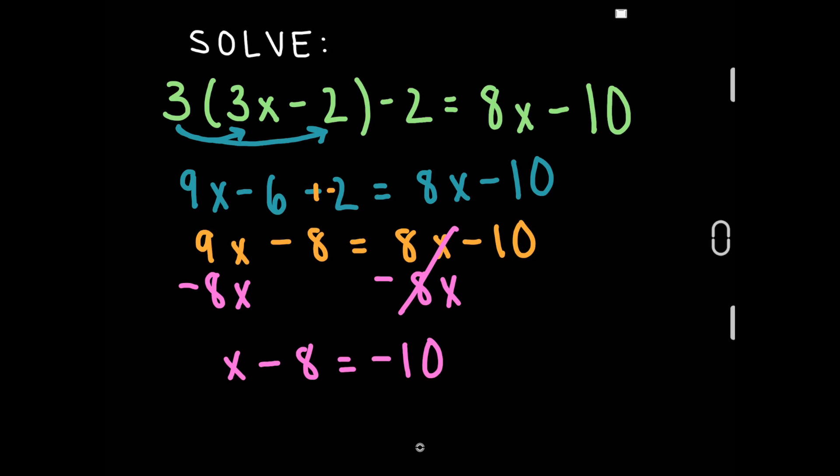Now let's get the variable by itself by adding 8 on both sides. Remember, we have to use the inverse of either subtraction or addition to get the x by itself. Negative 10 plus 8 is negative 2. Our final answer is x equals negative 2.